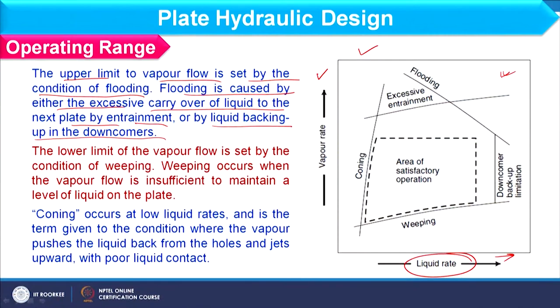In this image you can see that excessive entrainment leads to flooding, and then the downcomer backup condition. This happens when liquid flow rate continuously increases along with vapour. The controlling flow rate is vapour, because vapour causes liquid to hold over the plate, preventing it from moving downward. When we check the condition of entrainment as well as flooding over the plate, we should check and set the vapour flow rate accordingly so these conditions do not occur.